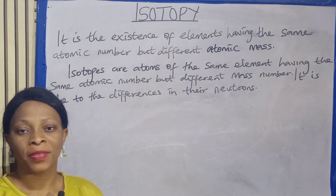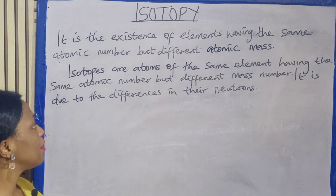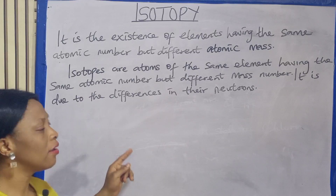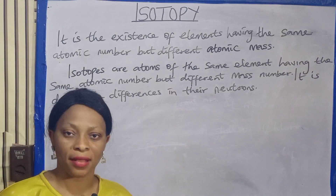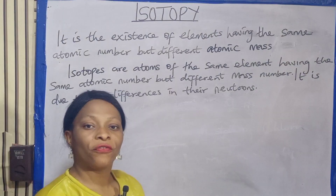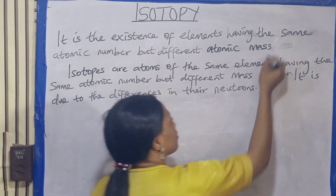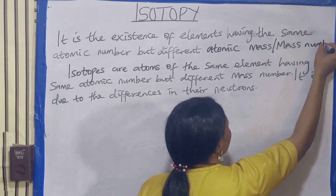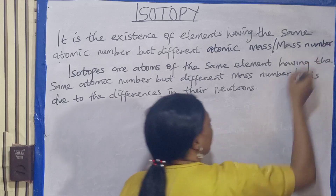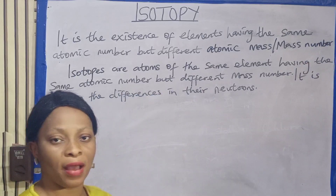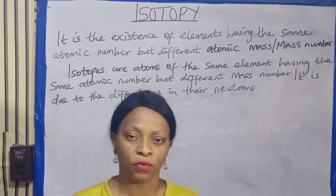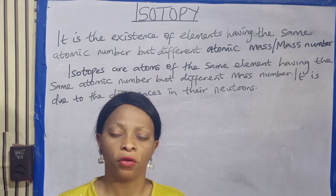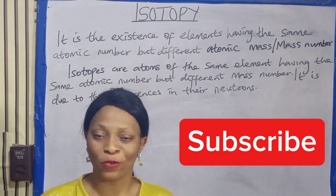Basically, what is an isotope? It is the existence of elements having the same atomic number but different atomic mass. Another word for atomic mass is mass number. So elements that have the same atomic number but different mass number — that is an isotope. And the existence of it, or the phenomenon, is what we refer to as isotopy.